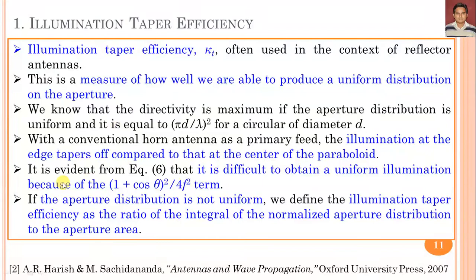With a conventional horn antenna as the primary feed, the illumination at the edge differs compared to that at the center of the paraboloid. It is difficult to obtain a uniform illumination because of the (1 + cos θ)²/(4πF²) term in the aperture distribution equation. If the aperture distribution is not uniform, illumination taper efficiency is defined as the ratio of the integral of the normalized aperture distribution to the aperture area.